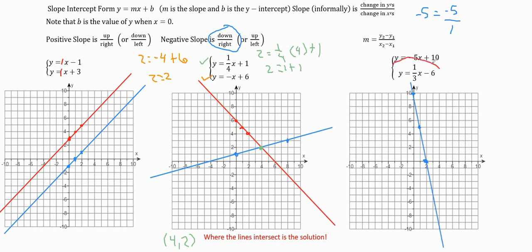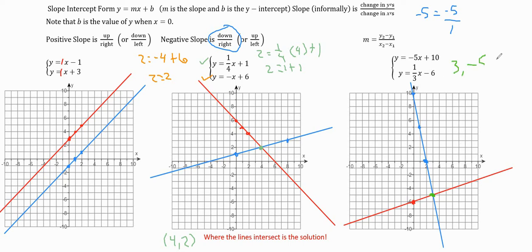Now we graph y equals 1/3 x minus 6. We start at the y-intercept, going down 6. Our slope is positive 1/3, so from the first dot we go up 1 and right 3. We can already kind of tell where the lines are going to intersect. After graphing, it looks like they intersect at the point (3, negative 5). You can check this by substituting into both equations, which is a great method — especially for multiple choice questions, where you should never miss one of these.